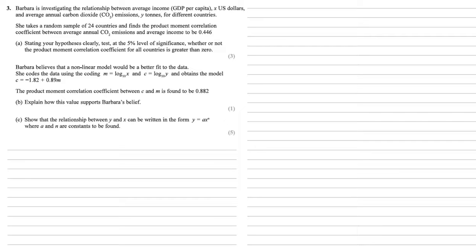Barbara is investigating the relationship between average income and average annual carbon dioxide emissions for different countries. She takes a random sample of 24 countries and finds the product moment correlation coefficient between average annual CO2 emissions and average income to be 0.446.